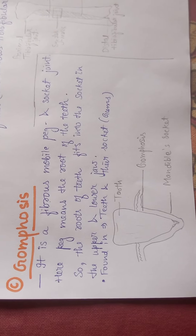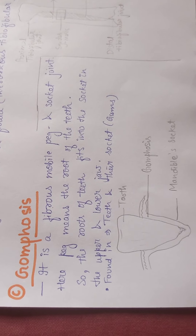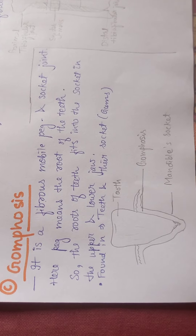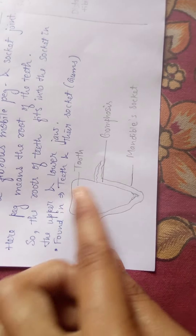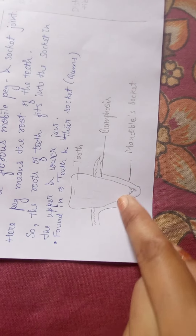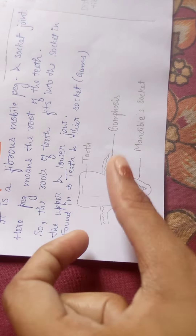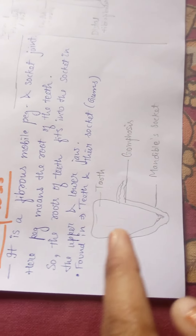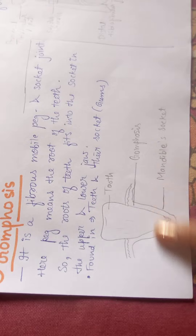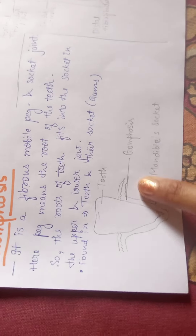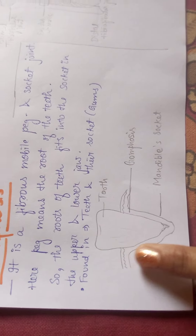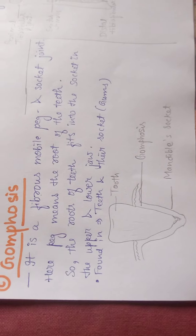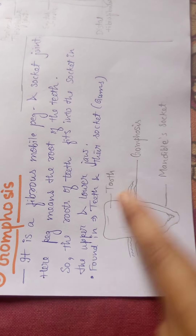Let's talk about gomphosis. This is also a fibrous mobile peg and socket joint. The root of the tooth is fixed in a socket — it is fixed in a mandible socket. This is the lower jaw, where your tooth will be embedded or fixed. This joint is called gomphosis.